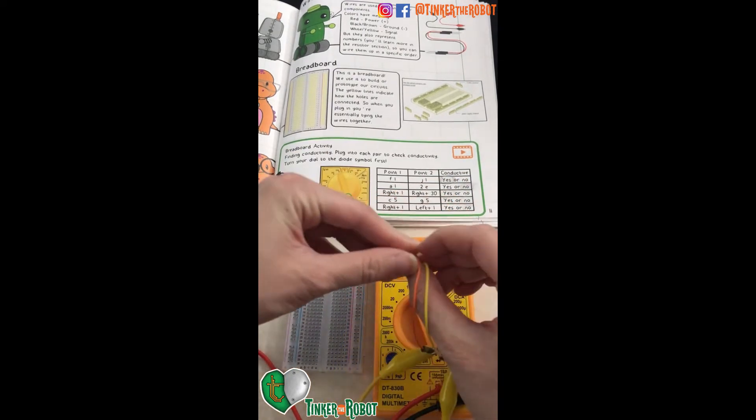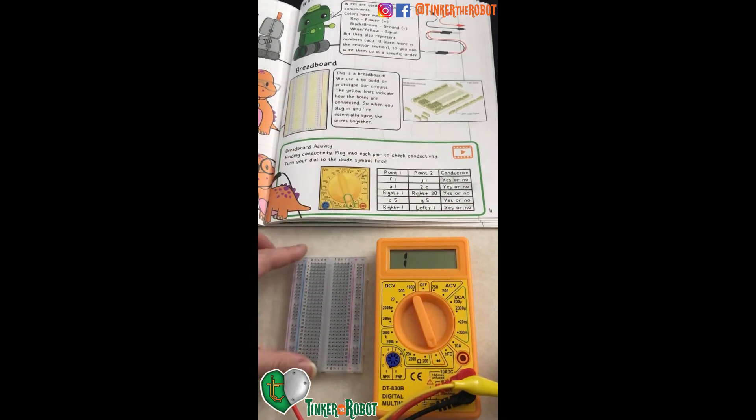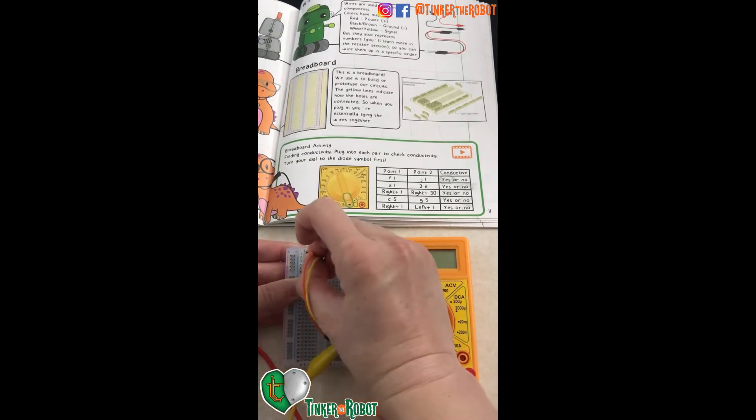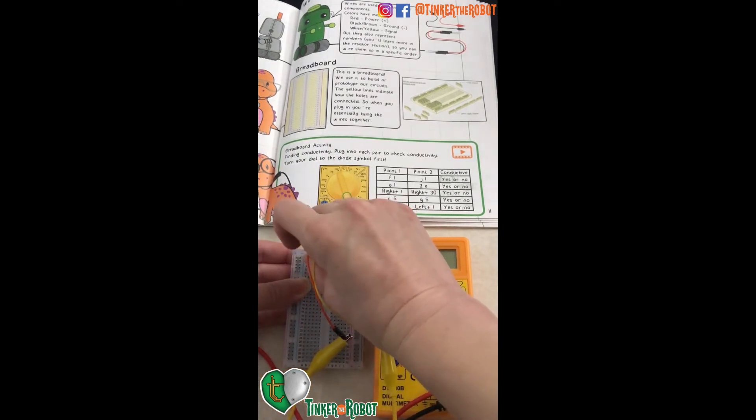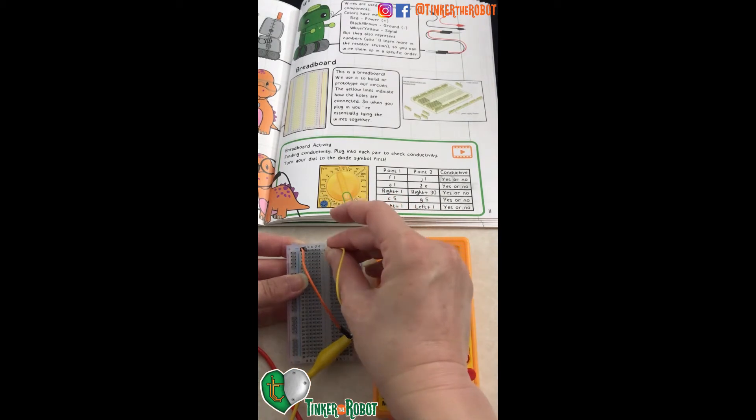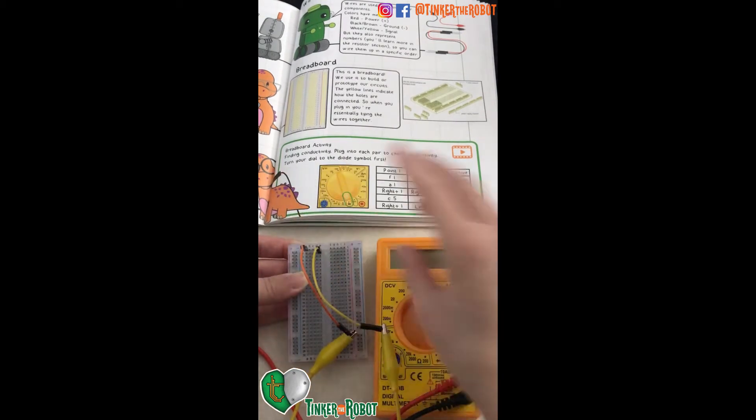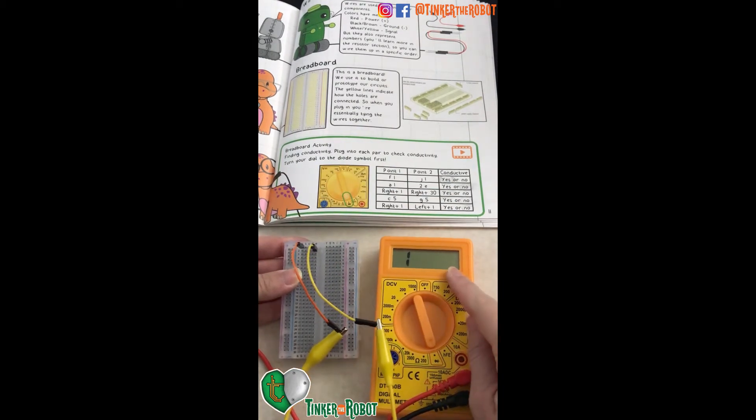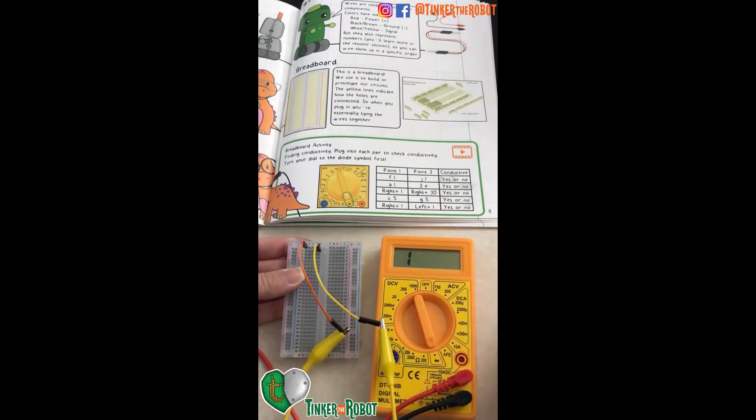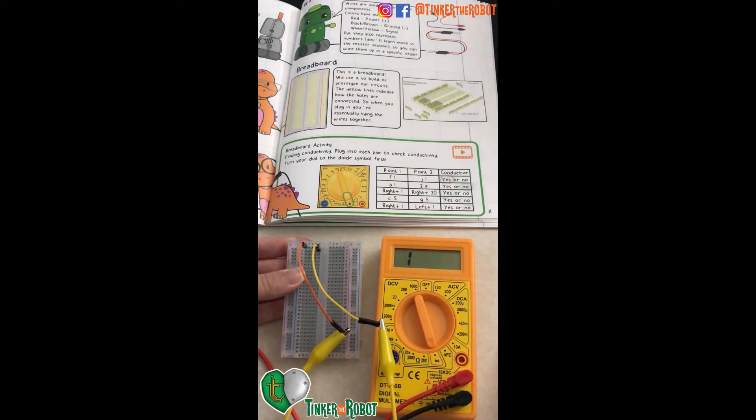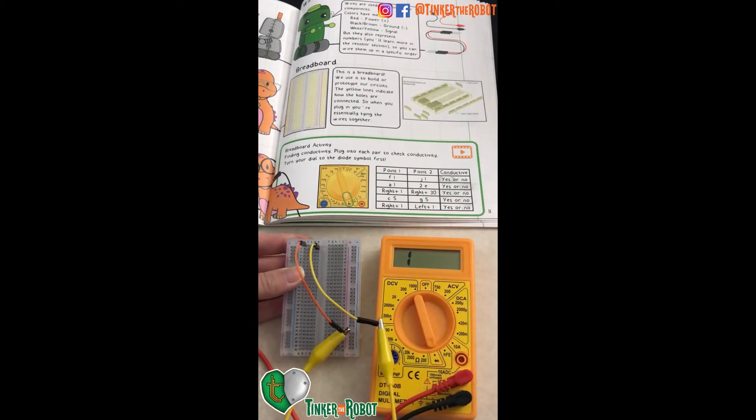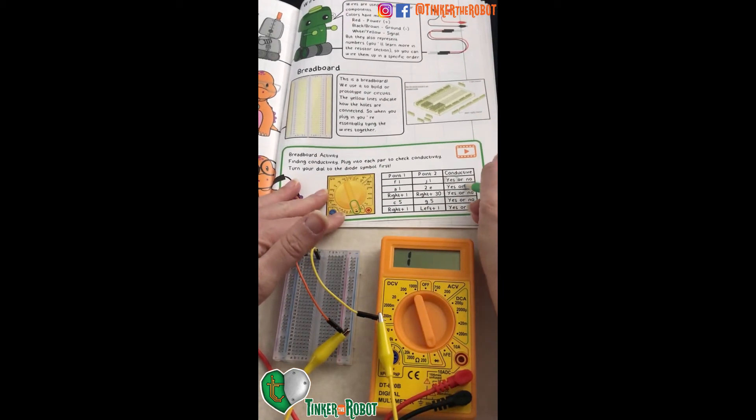Our next point is A1, E2. So A1 right here, plug it right in, and E2. And you see that our value did not change, it is not close to zero, so that means it is not conductive. So they're on two separate rows so they're not connected. So you can say no.